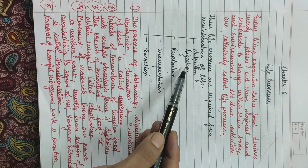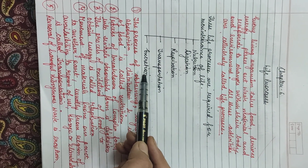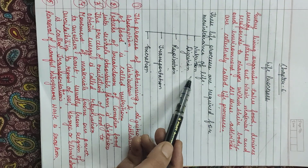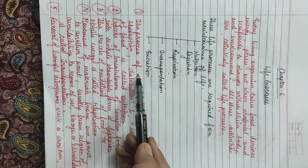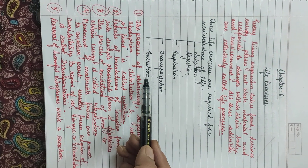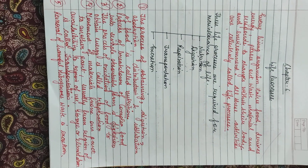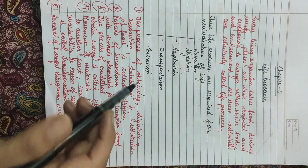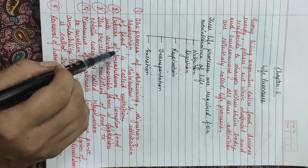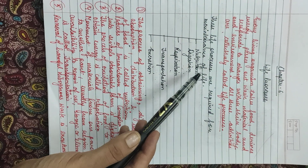Nutrition, digestion, respiration, transportation, and excretion — these are all the life processes which are necessary for the survival of a living organism. Now we will go into the definition of all of these one by one.